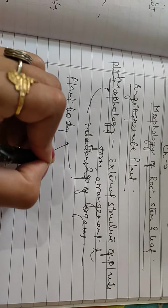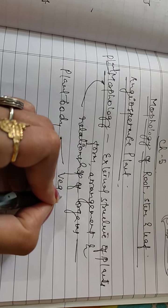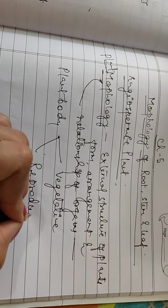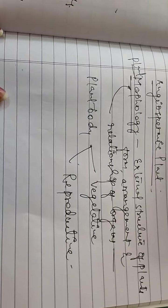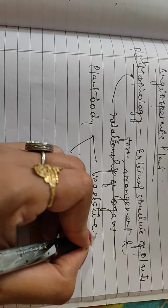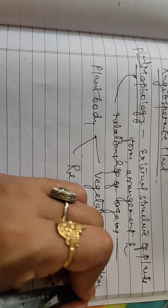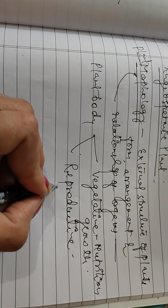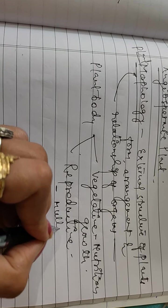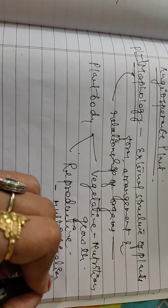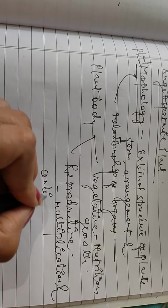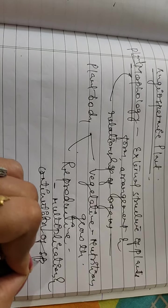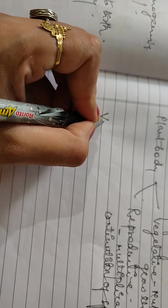The plant body is made up of two parts: one is known as vegetative and the second one is known as reproductive organs. Vegetative organs are involved in functions like nutrition and growth of the plant body, while reproductive organs are concerned with multiplication and continuation of species.